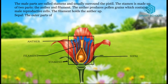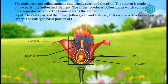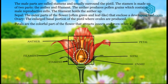The outer parts of the flower, often green and leaf-like, enclose the developing bud. The ovary is the enlarged basal portion of the pistil where ovules are produced. Petals are the colorful part of the flower that attract insects and even other small animals such as mice, birds, and bats.